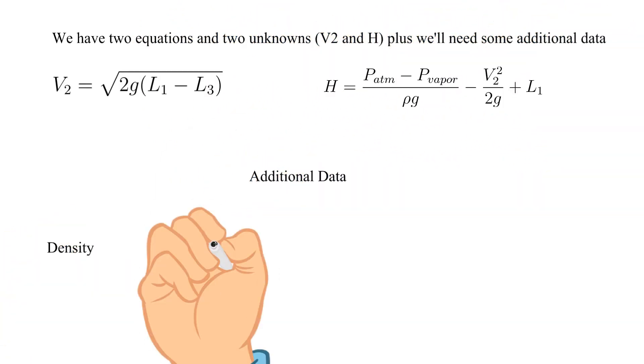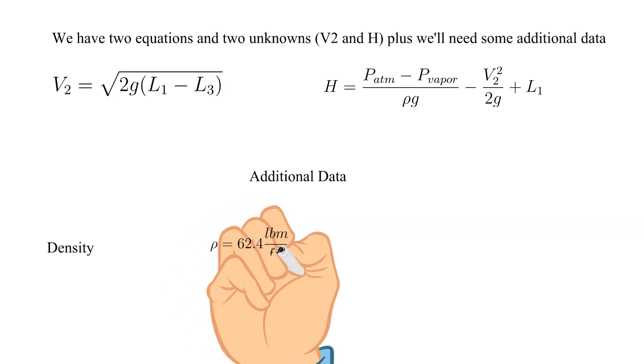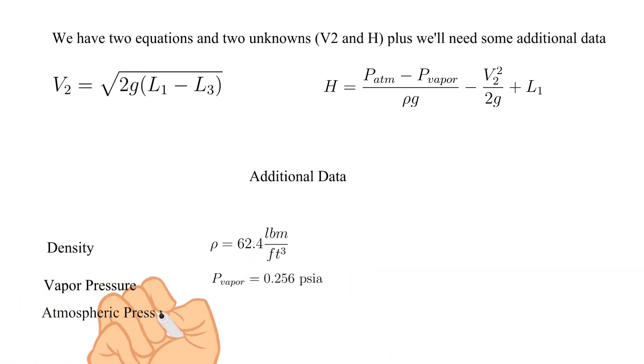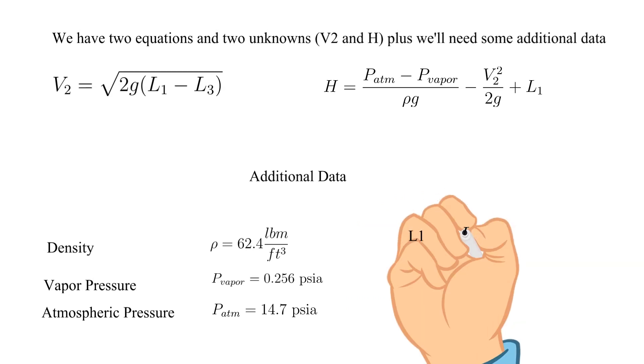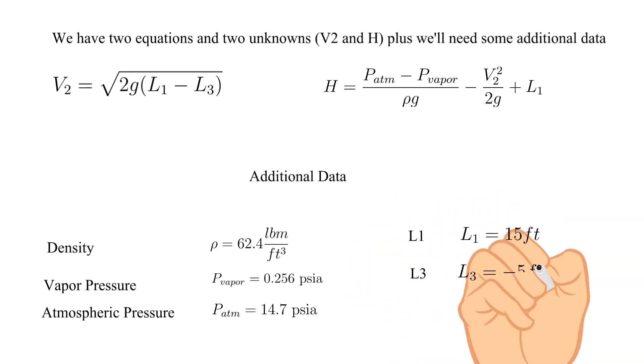We have two equations and two unknowns, V2 and H, plus we'll need some additional data. Density is 62.4 pounds mass per cubic feet. Vapor pressure equals 0.256 PSIA. Atmospheric pressure equals 14.7 PSIA.